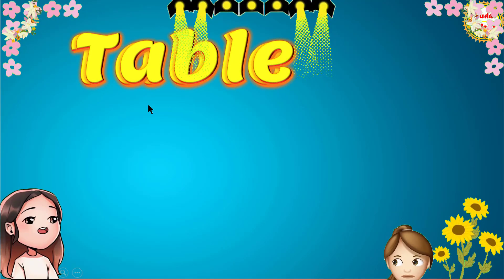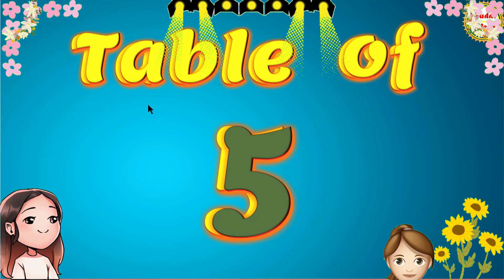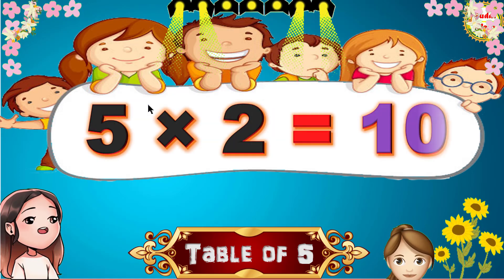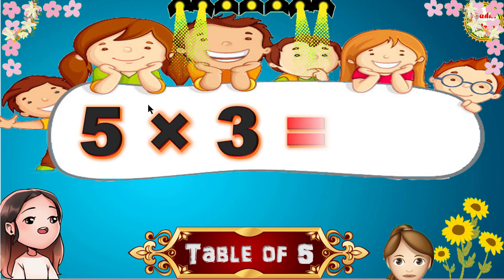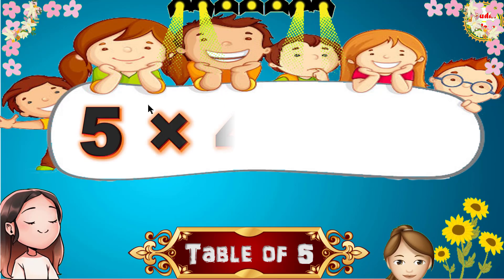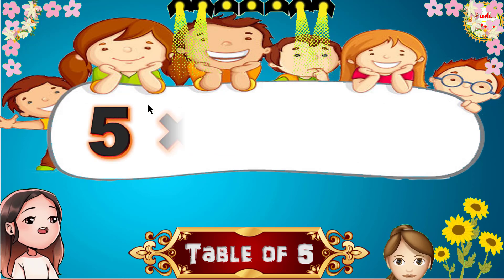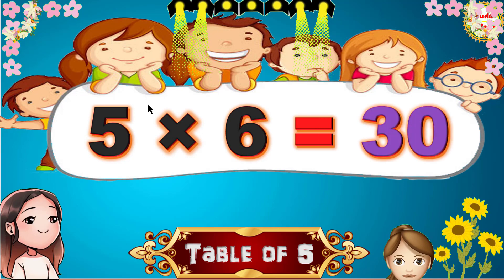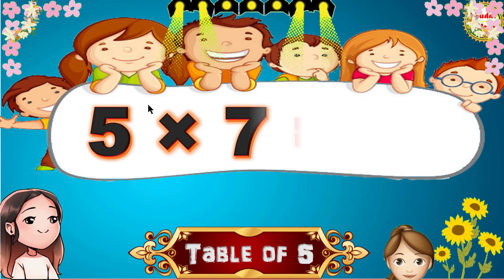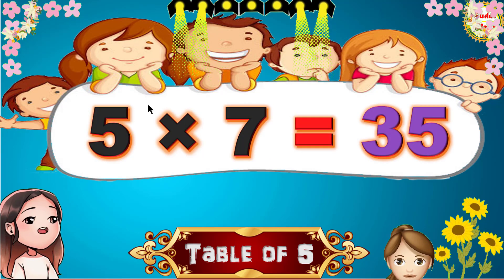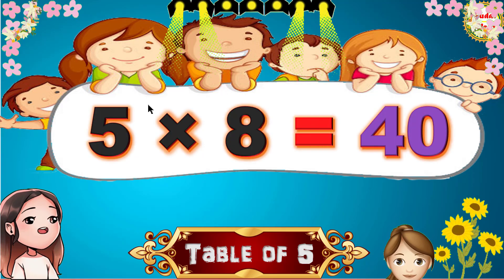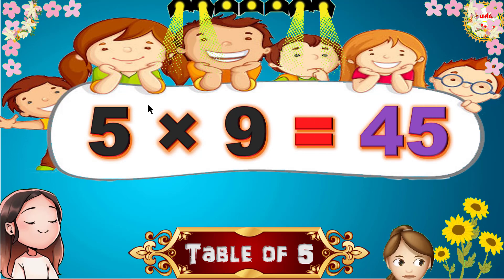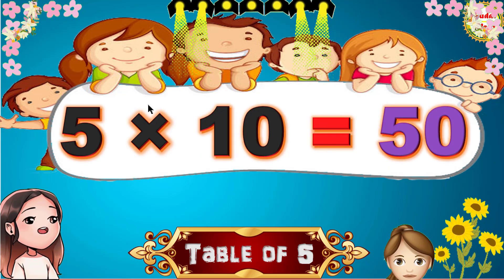Hello Children. We will learn the Table of 5. 5 1s are 5, 5 2s are 10, 5 3s are 15, 5 4s are 20, 5 5s are 25, 5 6s are 30, 5 7s are 35, 5 8s are 40, 5 9s are 45, 5 10s are 50.